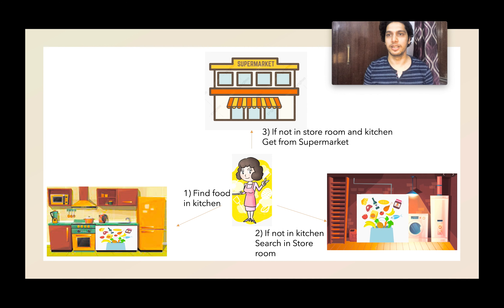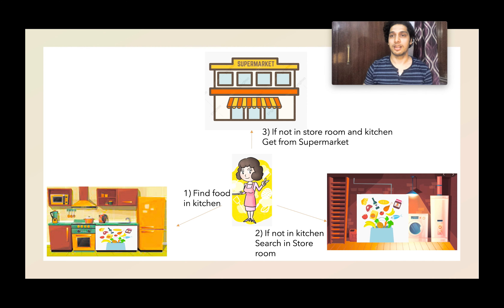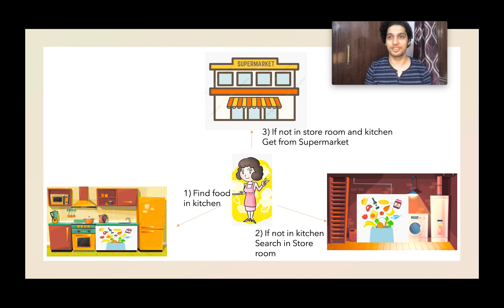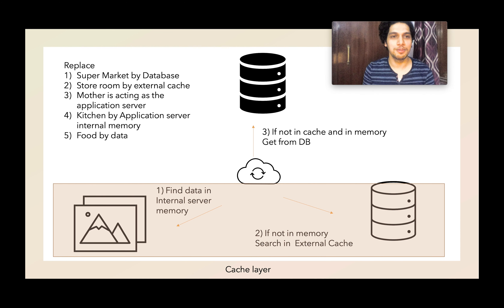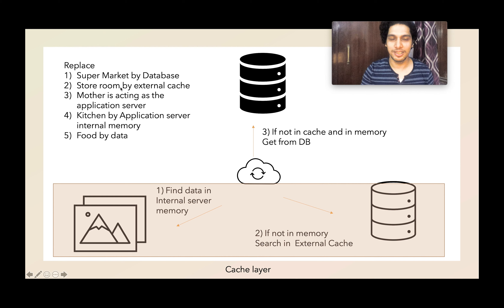You go inside your storeroom, get those groceries, place them in the kitchen, and utilize whatever is needed. In case the item is exhausted from both places, you have to go out of the house, drive your vehicle, go to the supermarket, get the items, and place them in the kitchen as well as the storeroom. If you understood this much, then you understood caching. Let's see the magic — let's replace the supermarket with the database.